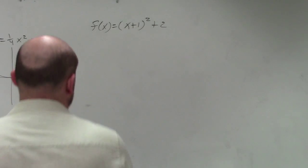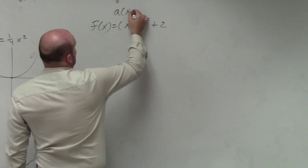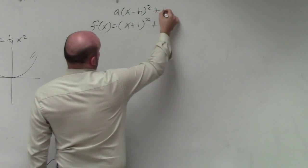As well as identify the vertex. So in this case, we have our vertex form is a times (x - h)² plus k.